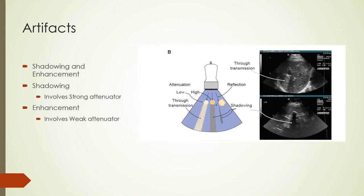When a highly attenuating object like a bone or kidney stone is in the path of the ultrasound beam, it absorbs the ultrasound wave and the region behind it is displayed as a low-intensity dark shadow. If the beam encounters a weak attenuator like a fluid-filled cavity, hyper-intense echoes from beyond are displayed as high-intensity enhanced signals.